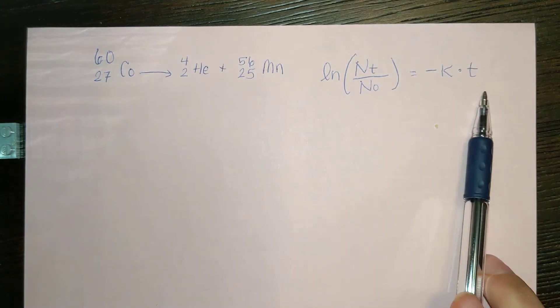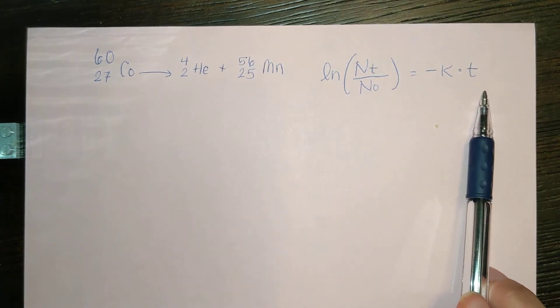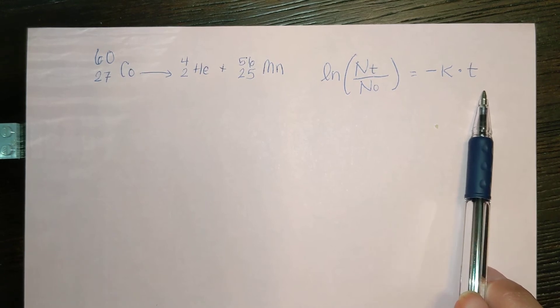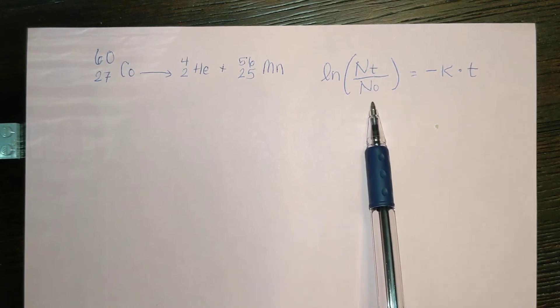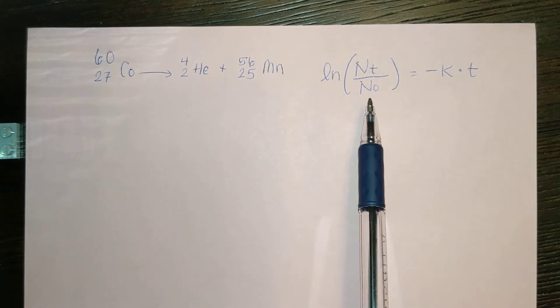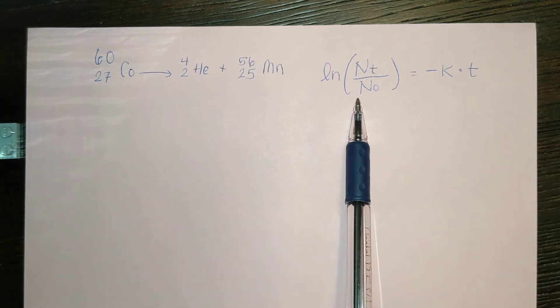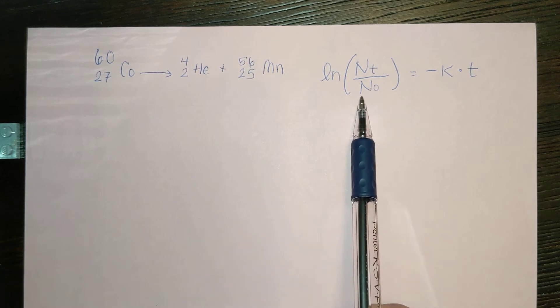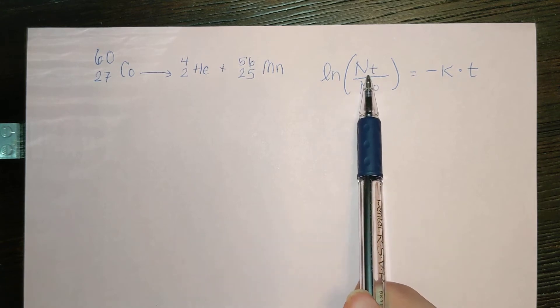We're going to be using this integrated form of the rate law. In our problem, they have given us the initial amount, 3.75 milligrams. We can turn this into number of atoms, or we could just keep it in terms of grams. If we keep it in grams, we're just going to solve for this in grams.